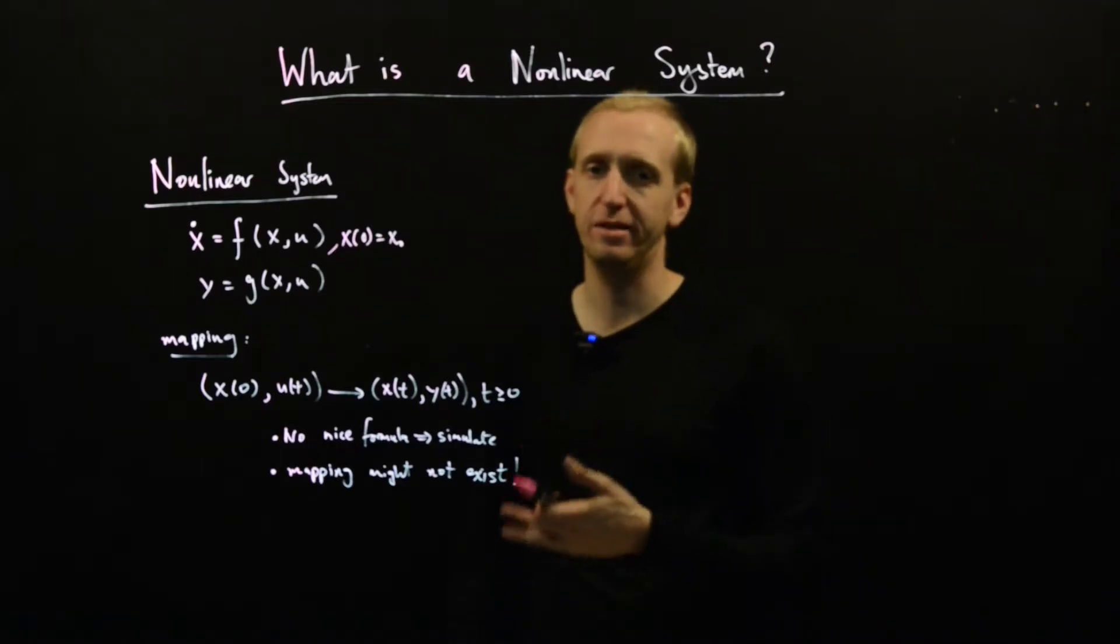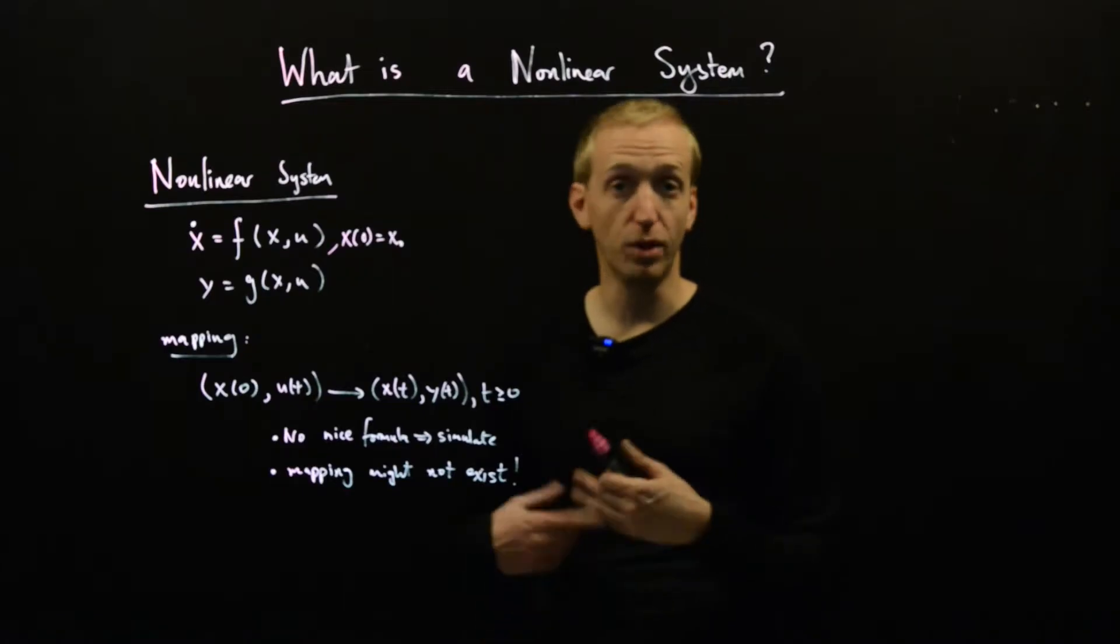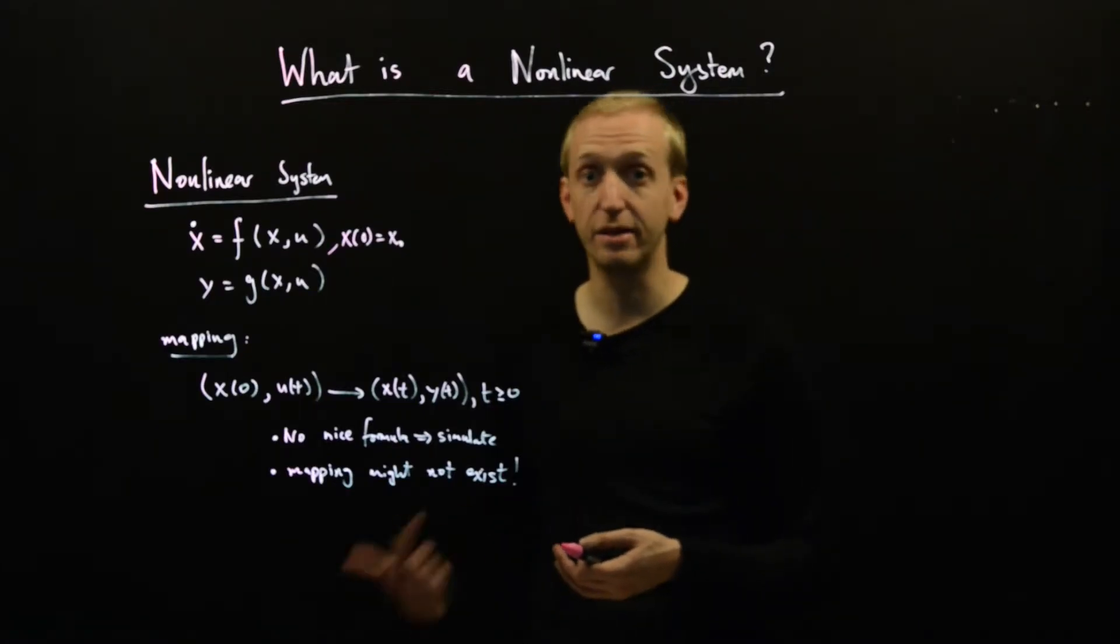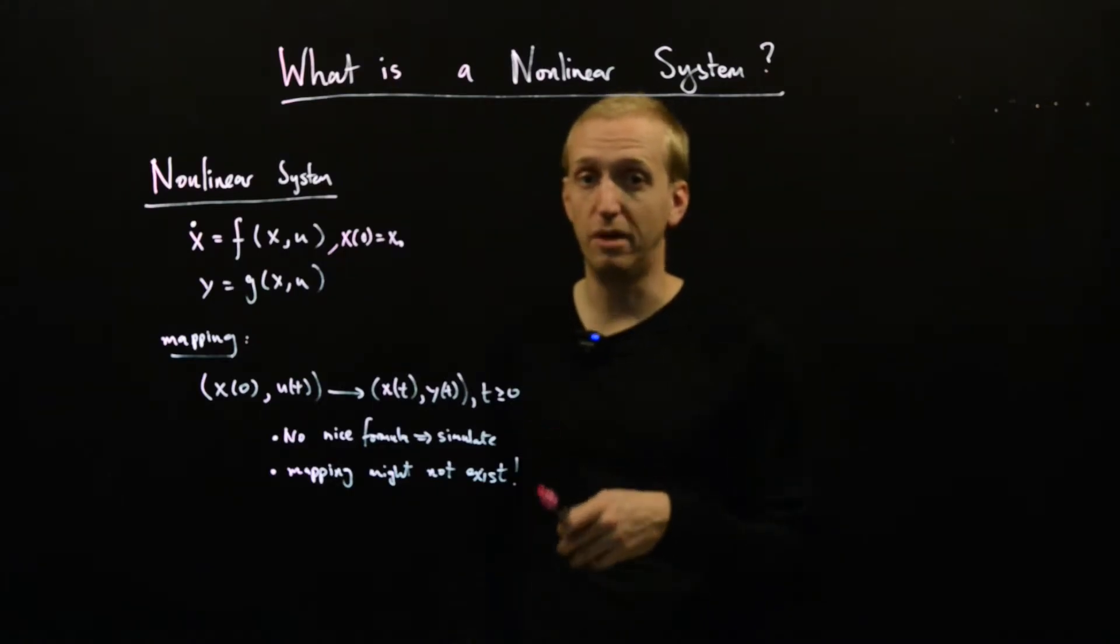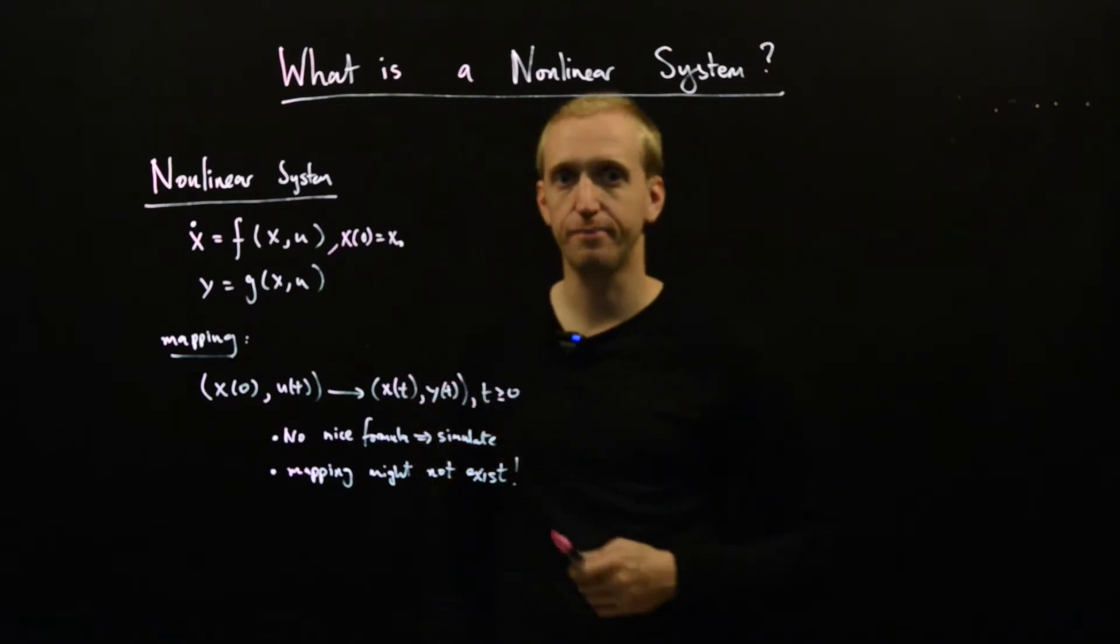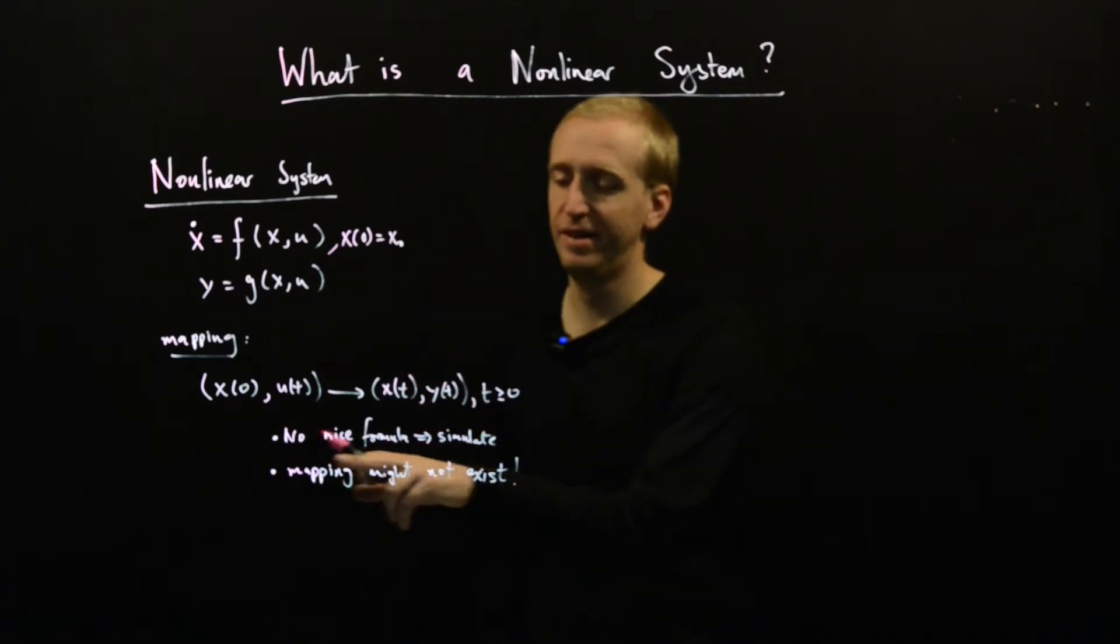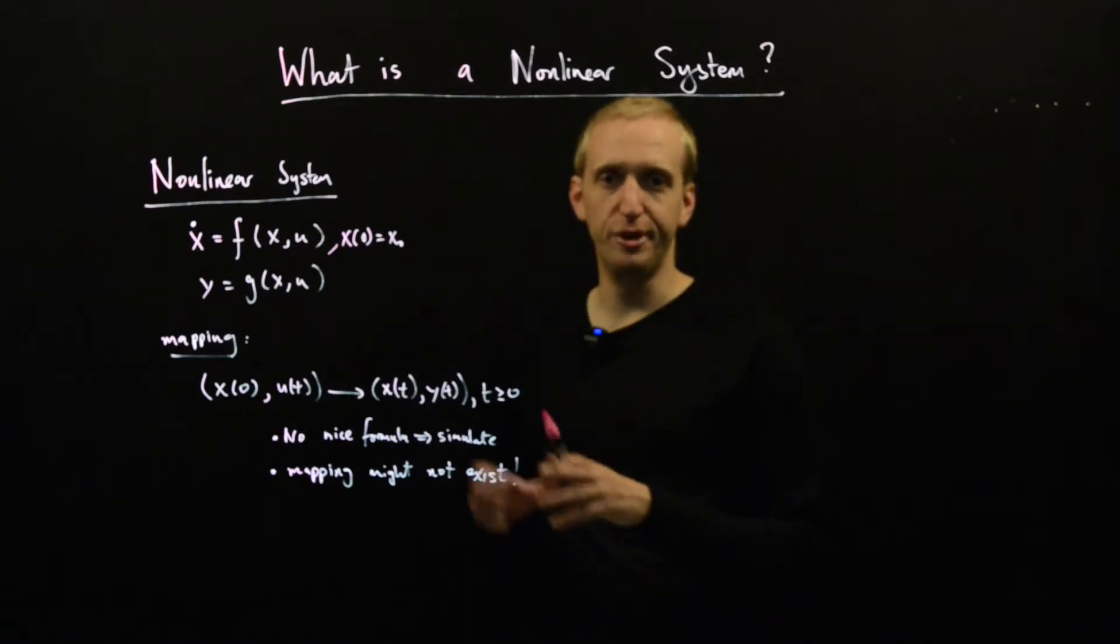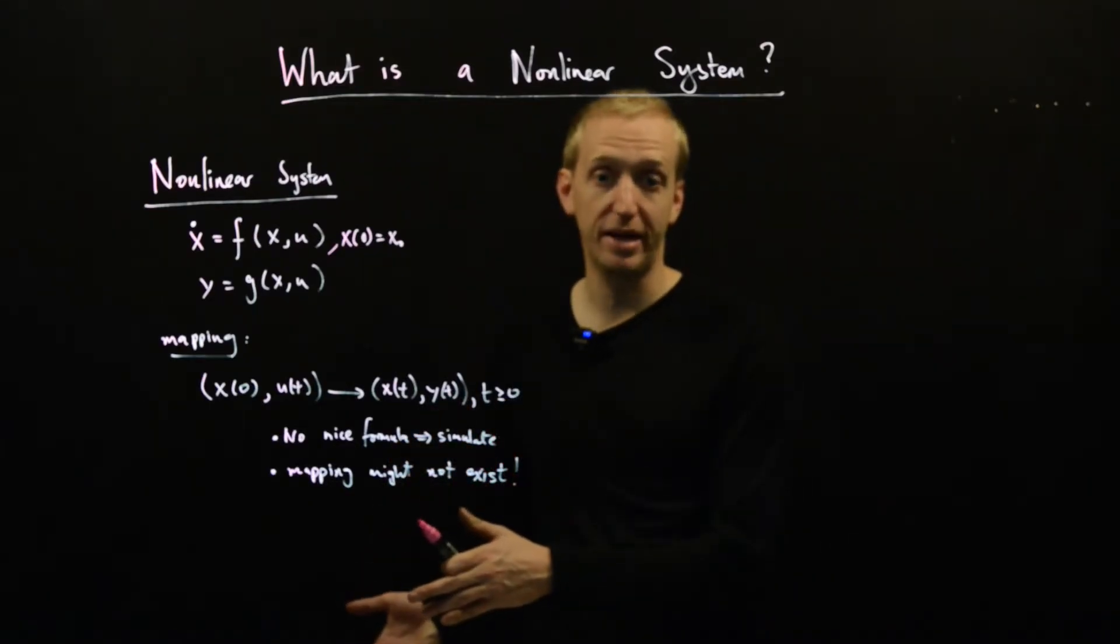But this is really a mathematical problem. It's not a problem in any real engineering sense. If you write down a sensible model for a system, be it linear or nonlinear, if that model is sensible, it will make some predictions about what happens in the future. And so the kinds of situations where the mapping might not exist - they're really very academic. They're not going to come up in practice.